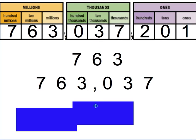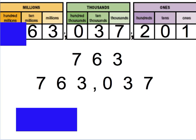Even if your number doesn't necessarily have all three place values, you still start all the way over to the left. So for example, let's say we have this number. Notice there's nothing in the hundreds, so I would just read this as 63,037,201. Take it step by step, and you'll be able to read that big number — starting all the way over to the left, taking each period at a time, and on the comma, saying the period's name.